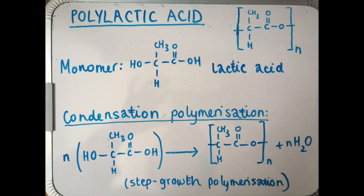As you can see, the lactic acid monomer has an alcohol group at one end and a carboxylic acid group at the other. This allows it to polymerize in this way.